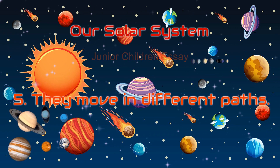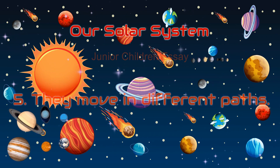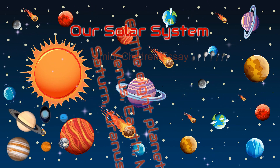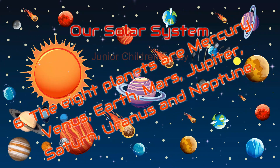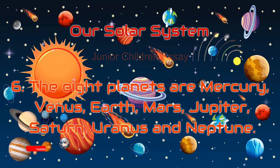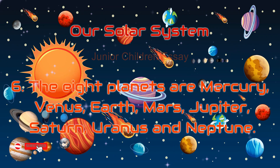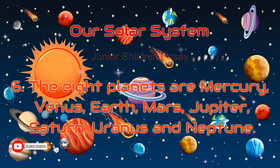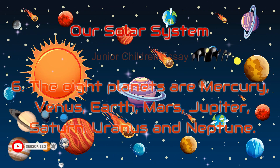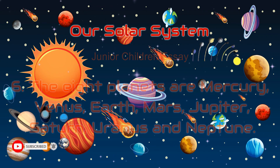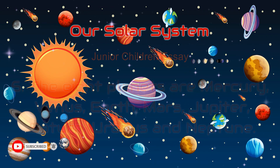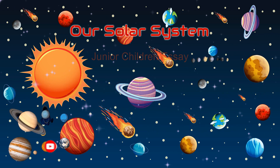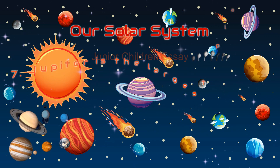They move in different paths. The eight planets are Mercury, Venus, Earth, Mars, Jupiter, Saturn, Uranus, and Neptune.